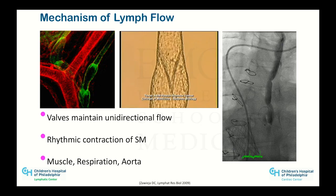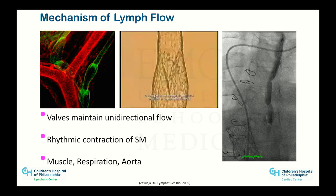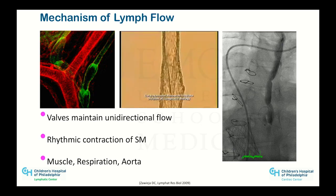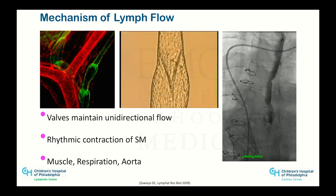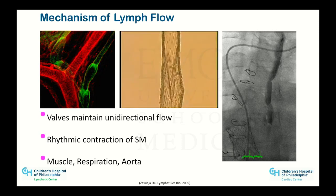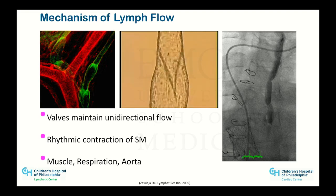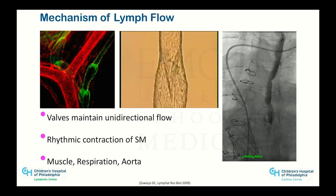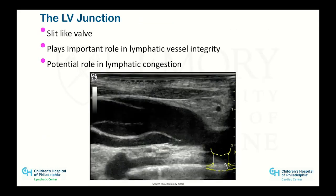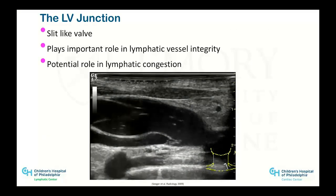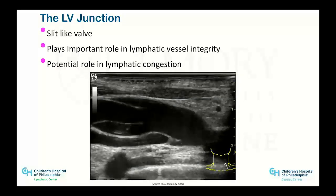In addition to the intrinsic rhythm and contraction, there are several other pumps in the system. There's a respiratory pump. Every time you walk, your muscles press against the lymphatic channels. And there's even a thought that the aorta, which sits right next to the thoracic duct, when pulsating, pushes on the thoracic duct and gets fluid to move forward. At the terminus of the thoracic duct, there's a valve.